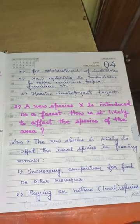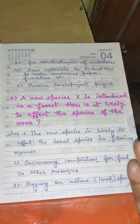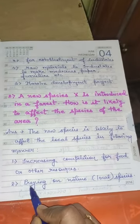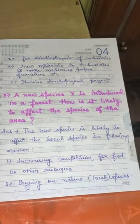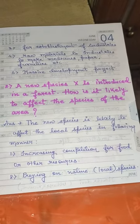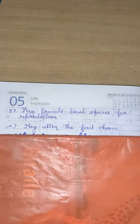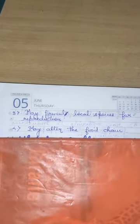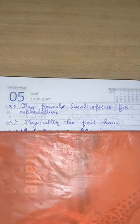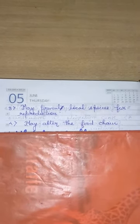Second, preying on the native or local species — if the introduced species is a predator, it may kill the smaller animals of that area. Third, the introduced species may prevent local species from reproduction; reproduction may become abnormal in function due to introduction of the new species. Fourth, it may alter the food chain. These are the four ways a new introduced species can affect existing species.